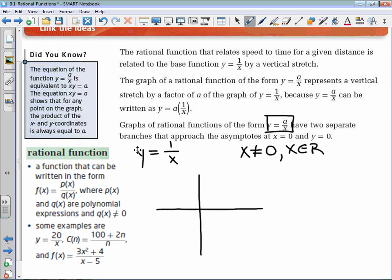And it's nice to identify some key points. A really key point on this function is 1 comma 1. You know, 1 divided by 1 is 1, but as x gets larger, the value of the fraction gets smaller.